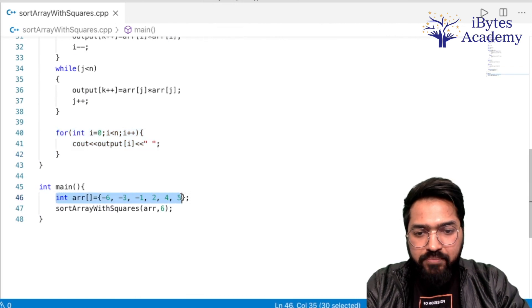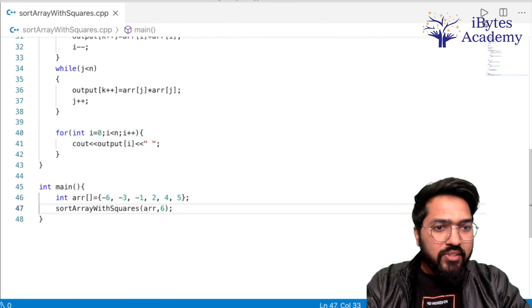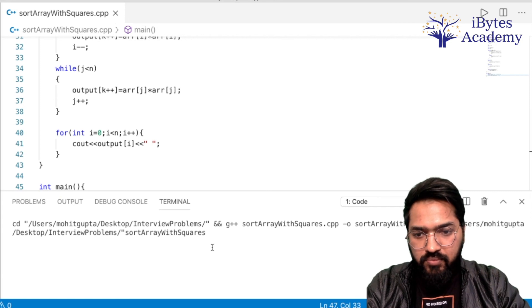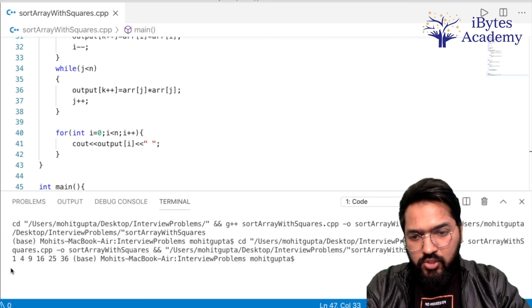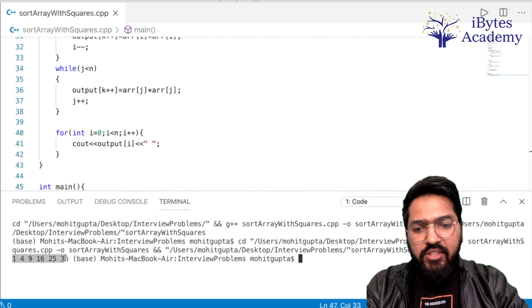Same input maine liye. Right, so let's try to run this. So we are getting 1, 4, 9, 16, 25, 36 which is the expected output.